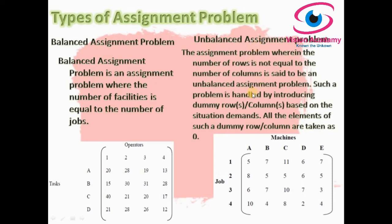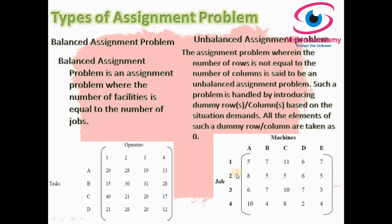The unbalanced assignment problem is the opposite of the balanced one — the number of rows is not equal to the number of columns. For example, if there are 4 jobs and 5 machines, we have 4 jobs and 5 machines, which makes it unbalanced. To make it balanced, we introduce dummy rows or dummy columns, and all elements in those dummy rows or columns must be set to zero.